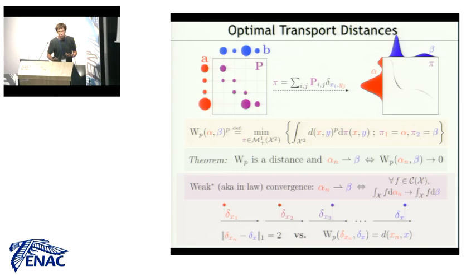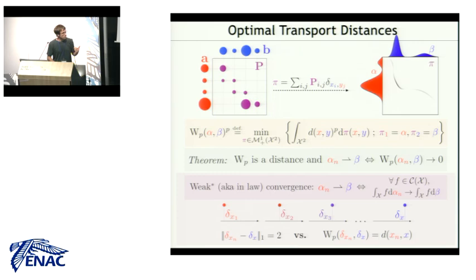That's why the Wasserstein distance is used a lot by probabilists to have quantitative statements about convergence in law. The most iconic theorem is the central limit theorem, which you can study using Wasserstein distance. My talk uses this in a practical way — to do computation, register shapes, do machine learning. The underlying message is this is the natural way to quantify that distributions are close together geometrically, which would not be possible with a stronger norm like the total variation norm.